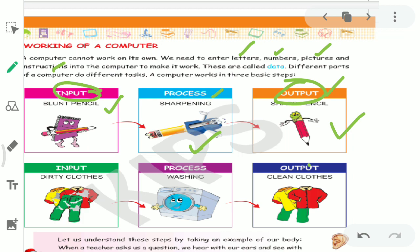Just like this blunt pencil is our input. We put it in the sharpener. Now what is the processing? When the sharpener sharpens it, sharpening - that is processing. Our output will be a sharp pencil.